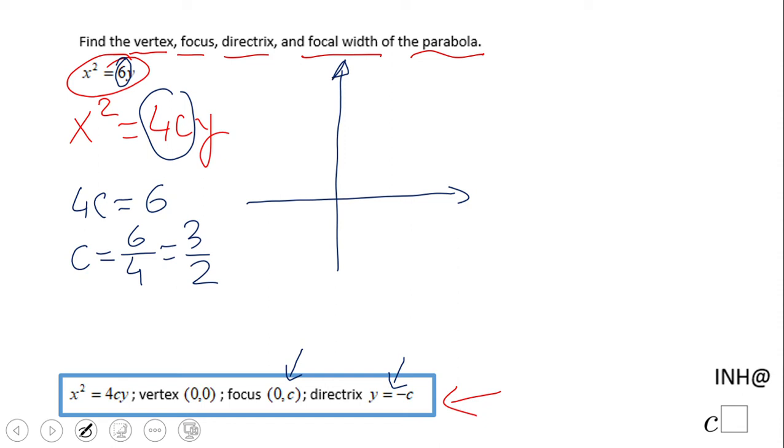That is going to be an open up parabola like this. The vertex will be here at (0, 0), and this c tells us that we need to move 3/2 units inside of the parabola.